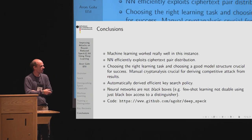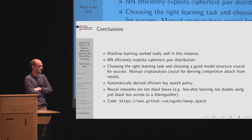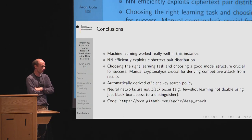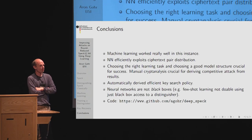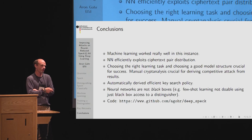In conclusion, machine learning worked really well in this instance. The neural network efficiently exploits the ciphertext pair distribution. It is crucial to choose the right learning task and model structure to be successful. We used manual cryptanalysis to derive a competitive attack from the distinguishers and automatically derived an efficient key search policy. Neural networks have a reputation for being black boxes, but here it's more appropriate to think of them as grey boxes — with access to a neural network that has learned to recognize three rounds of SPECK, you can very quickly learn to recognize six rounds with a good chosen input distribution. The code is all on GitHub.